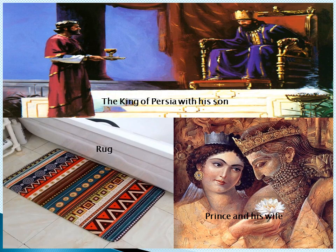Here we have some pictures. We can see the king of Persia with his son on the top. We can see a picture of a rug — although this is not a straw rug, it is a beautiful rug. In the similar manner, straw rugs are made. And here we see the prince and his wife, the shepherd's daughter, when they got married.